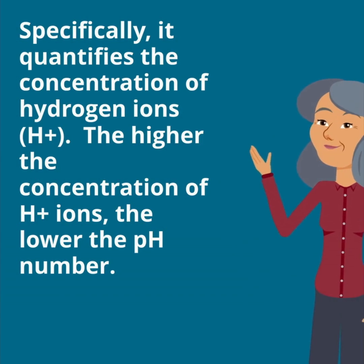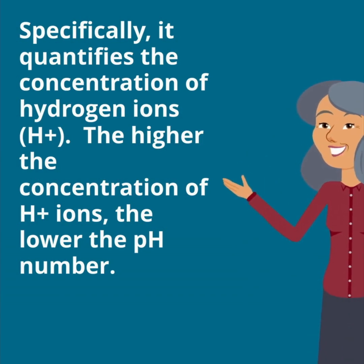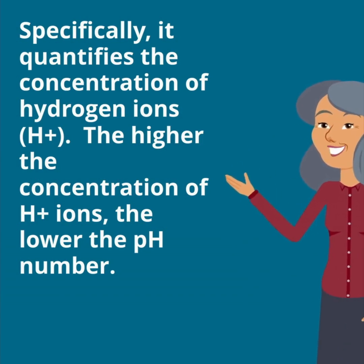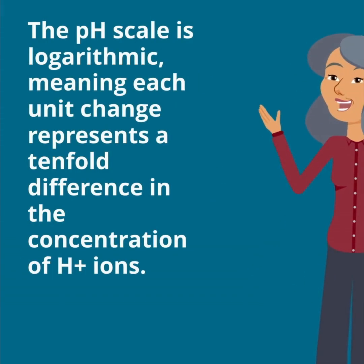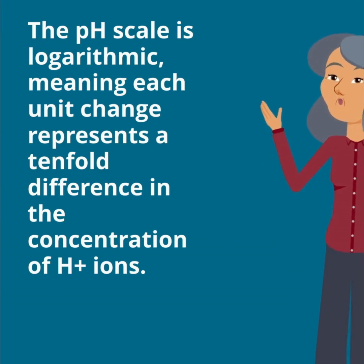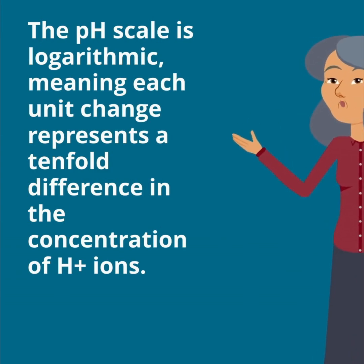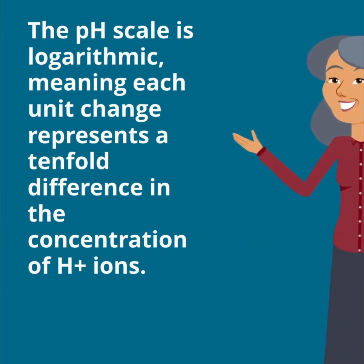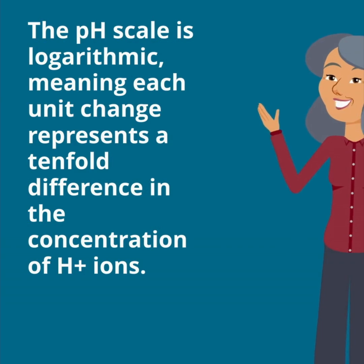The higher the concentration of hydrogen ions, the lower the pH number. The pH scale is logarithmic, meaning each unit change represents a tenfold difference in the concentration of hydrogen ions.